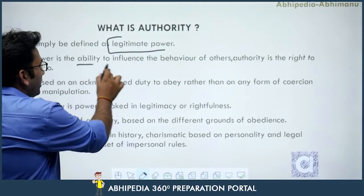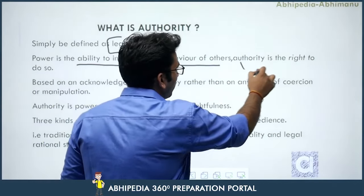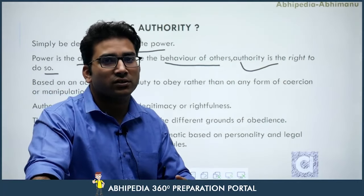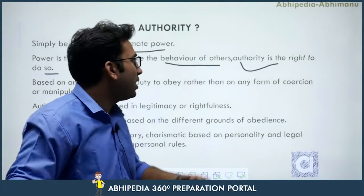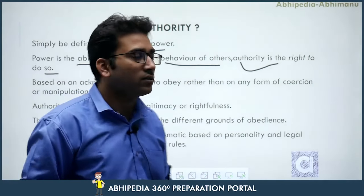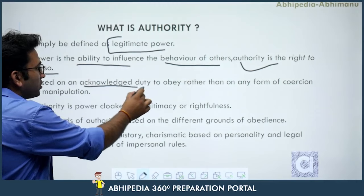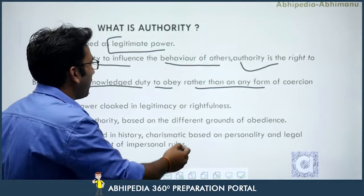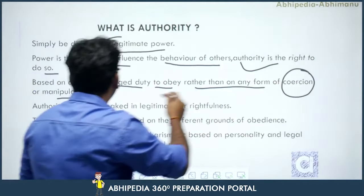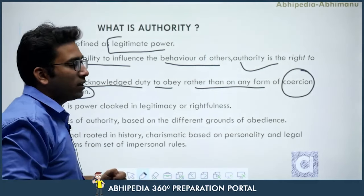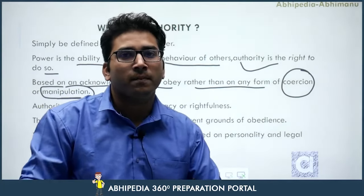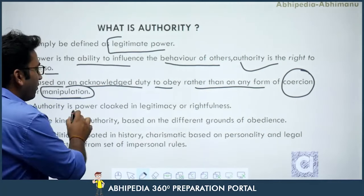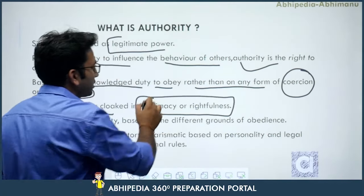Power is the ability to influence the behavior of others, while authority is the right to do so. Power unilaterally takes actions to change someone's behavior, but authority has the right to do so in a justifiable manner. Authority is based on an acknowledged duty to obey rather than on any form of coercion or manipulation. Power deals with coercion and manipulation, but authority does not — authority operates in a legal and rational manner.